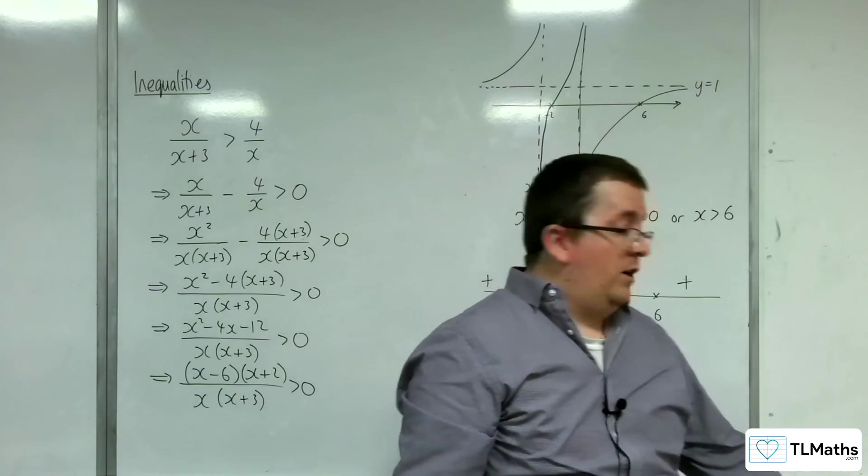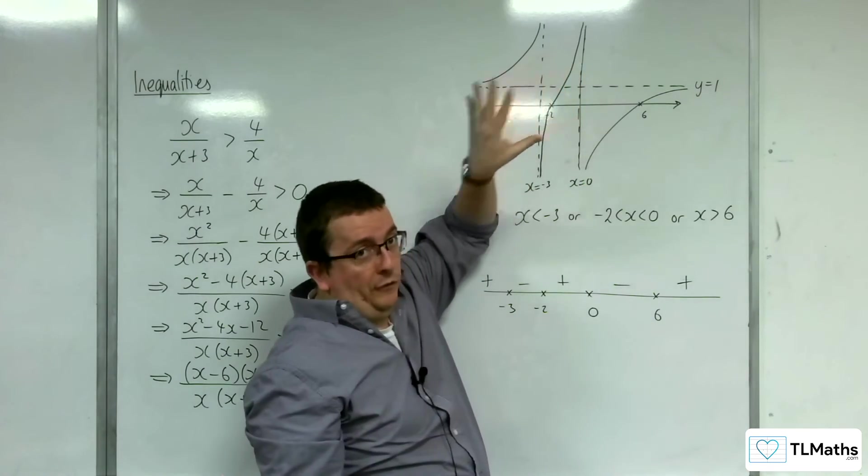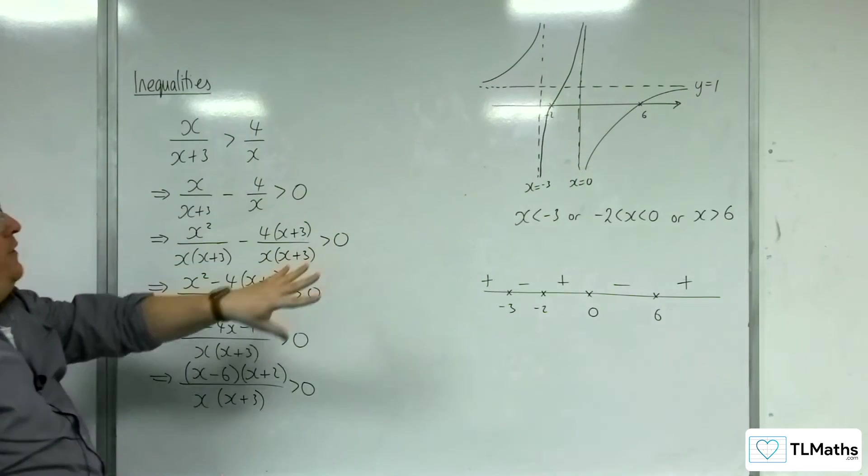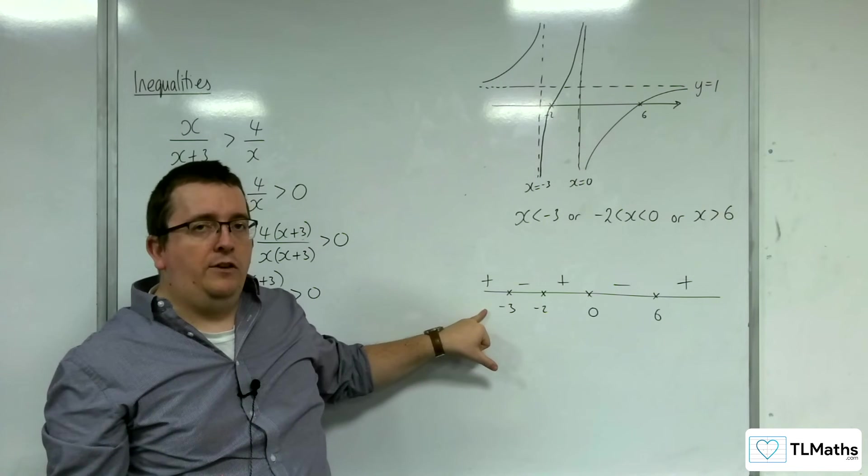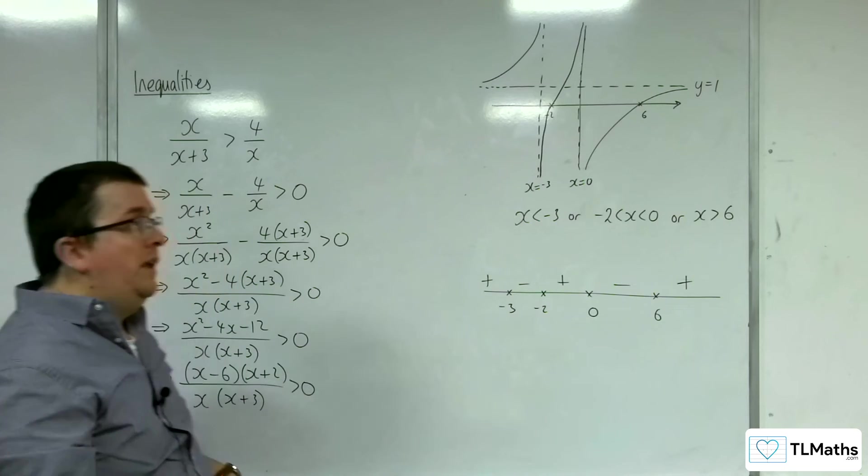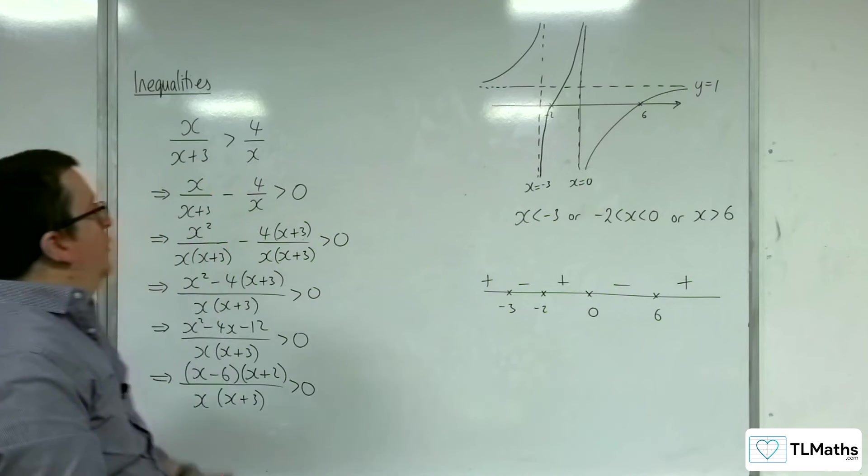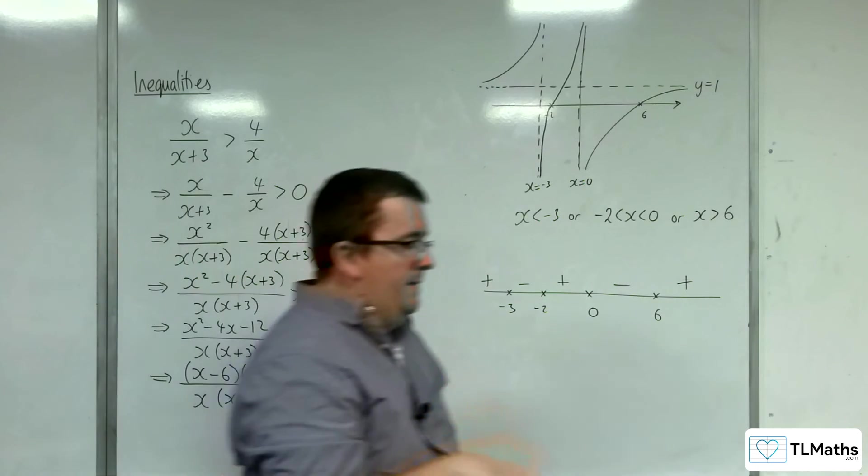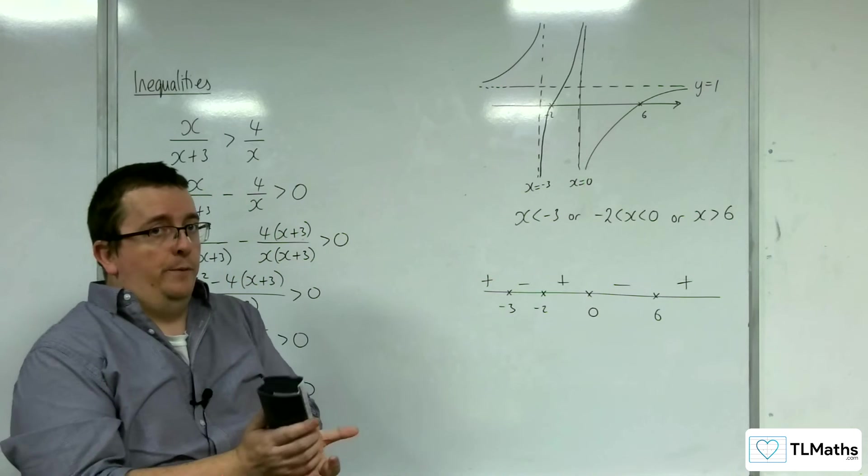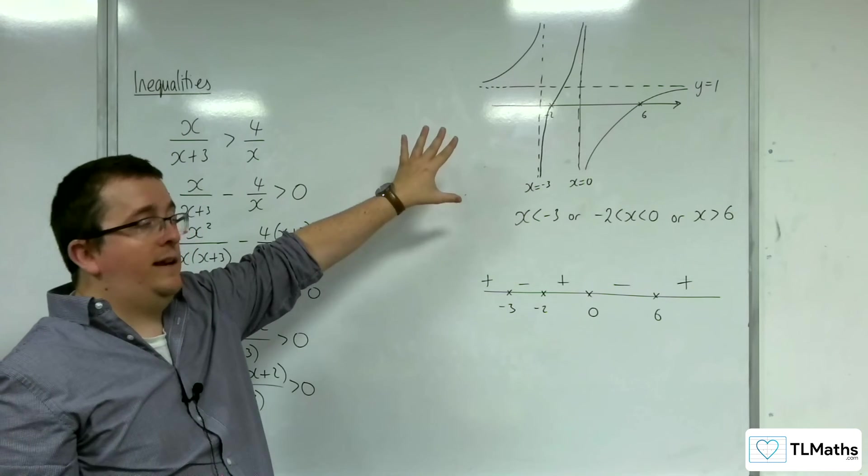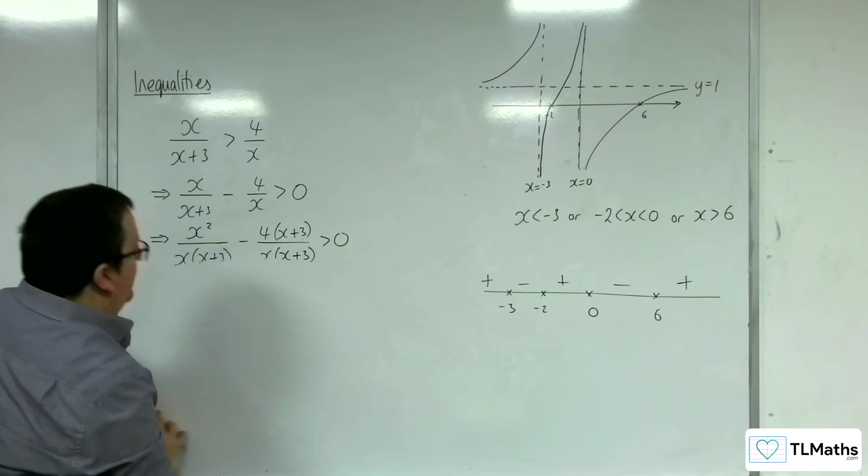probably the easiest way is to go through this method and then the line method. Okay, use the number line. Now, perfectly happy to use the multiplying by the denominator squared. Okay, but you might be guessing as to where this is now going to go. Okay, because we're going to get into quartic territory here. Okay, so let's see that.